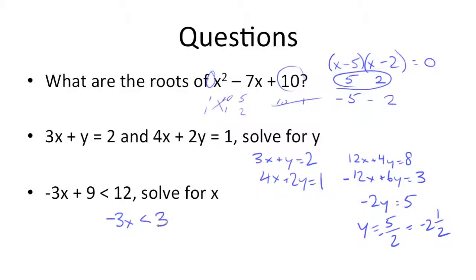So subtract 9 from both sides. And now, since we're dividing by a negative, we need to change the symbol to a greater than, divide by negative 3 on both sides, and we get x is greater than negative 1.